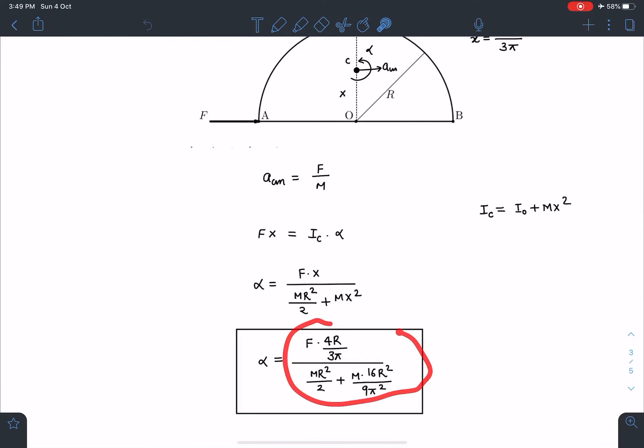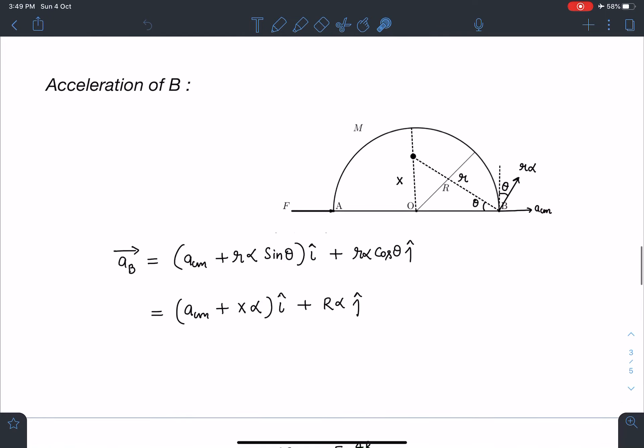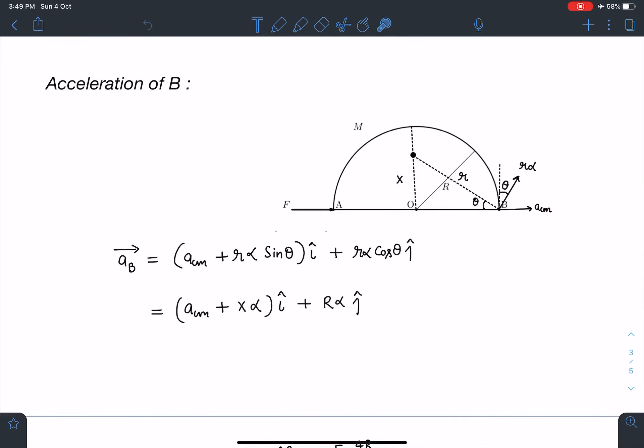Now let's see how exactly this point B acceleration can be calculated. Due to translation, all points on the rigid body will have same acceleration. In the previous problem also we had similar type of discussion due to translation part.